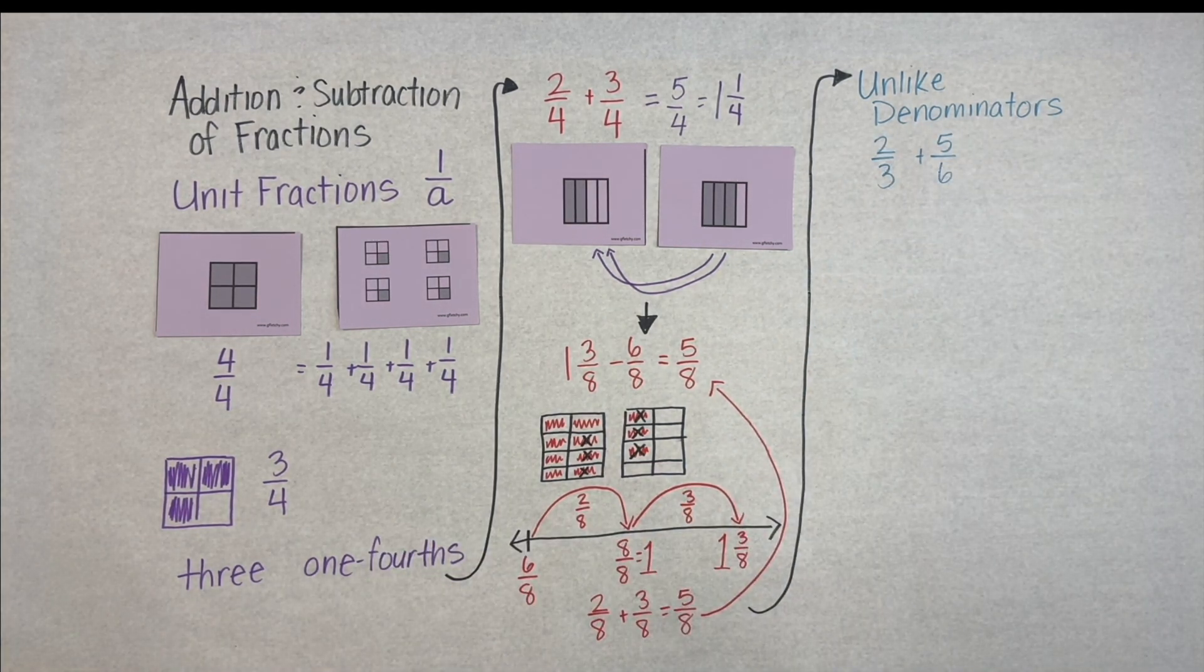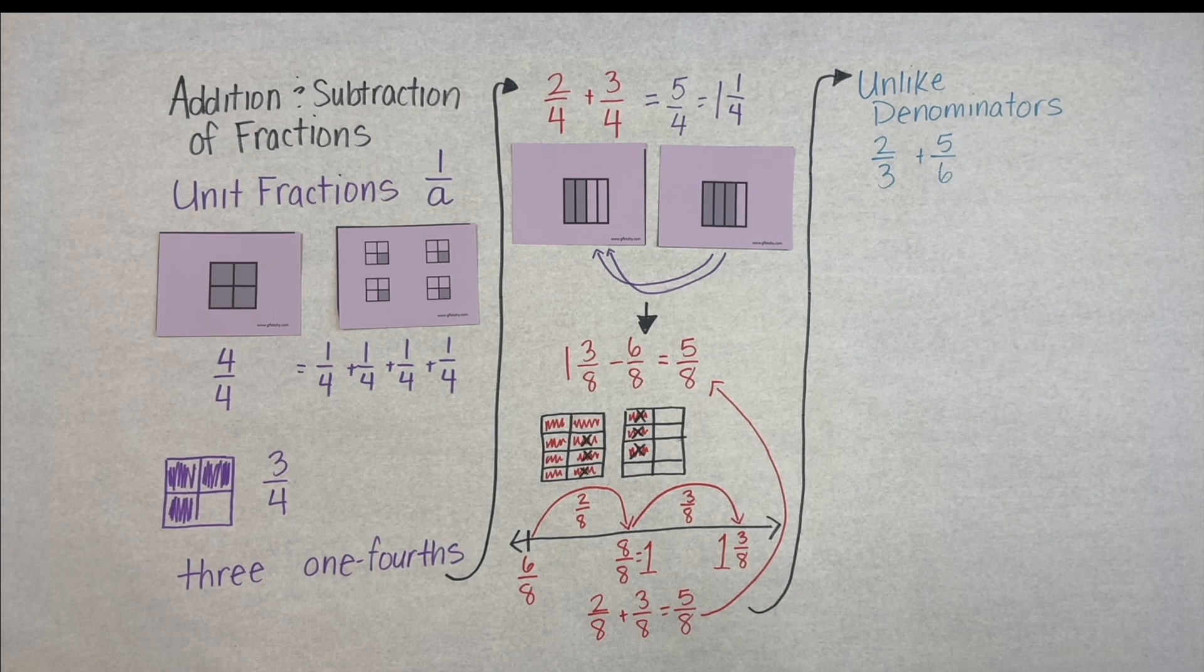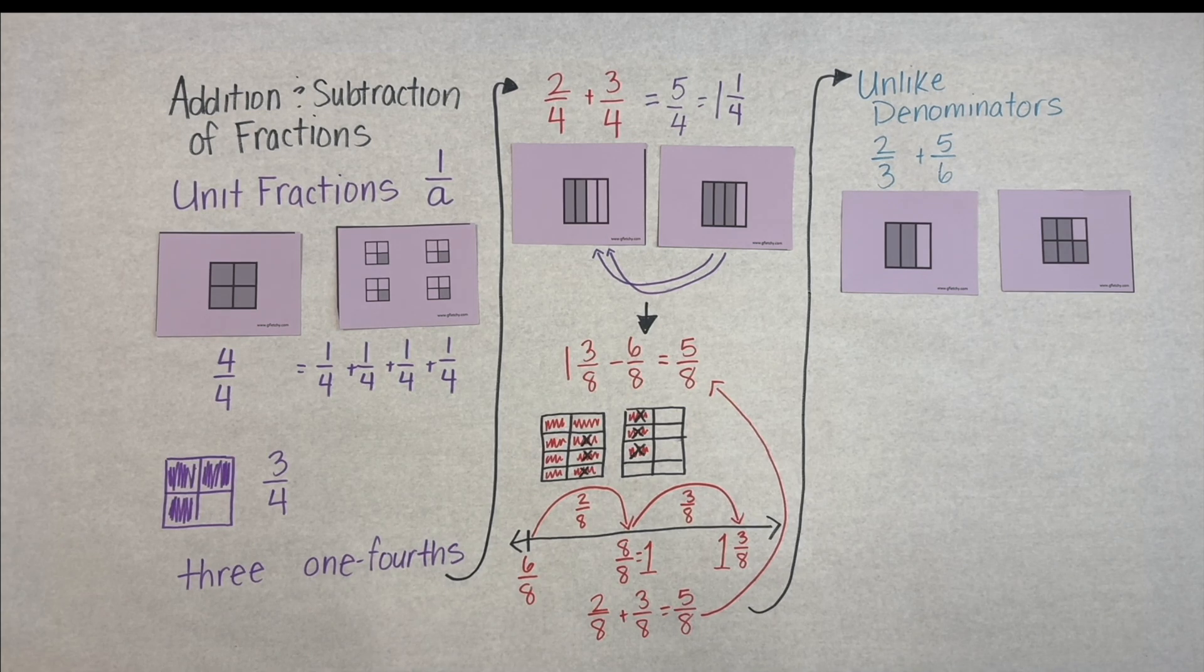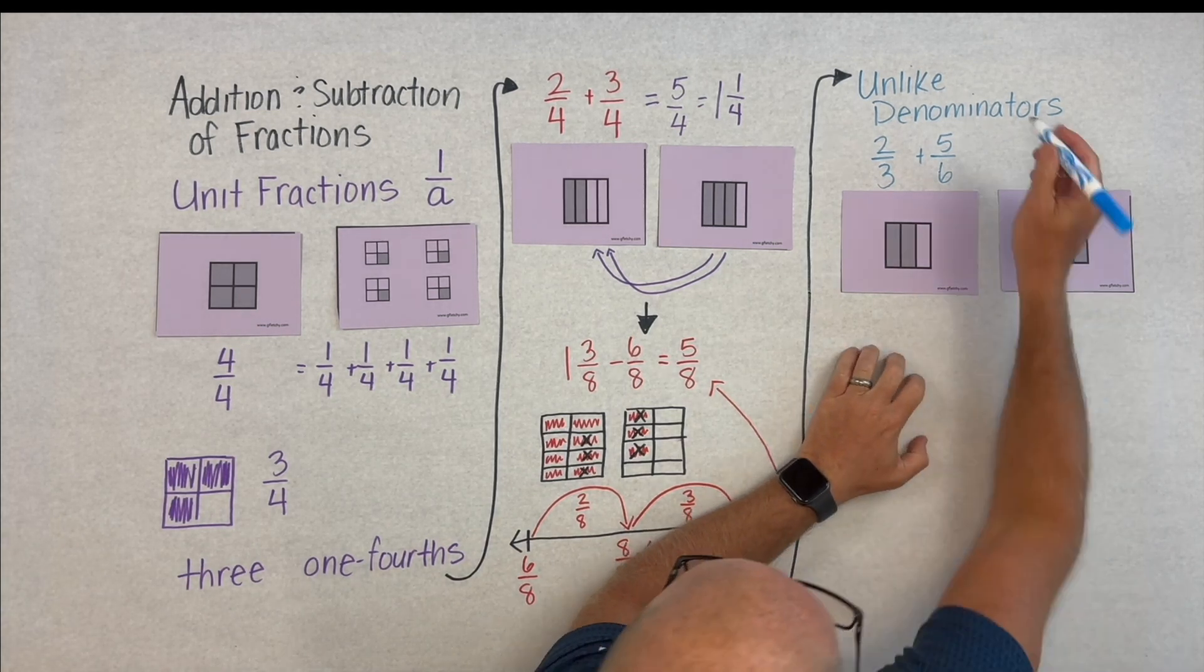Let's take this: two-thirds plus five-sixths. Oh, we immediately want to go to making a common denominator but we don't have to if we think of them as units and images.